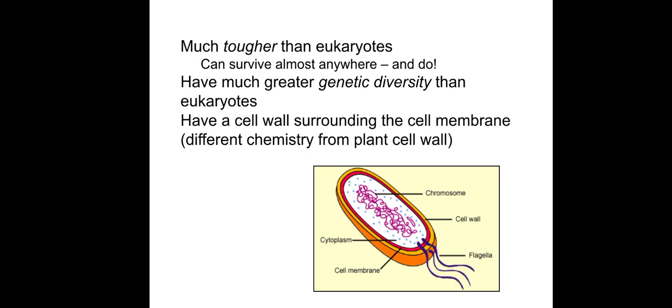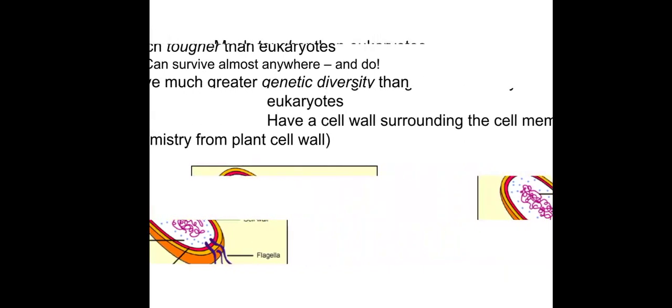Prokaryotes are much tougher than eukaryotes and can survive almost everywhere, though we cannot see them without a microscope or with our naked eye. They exist in air, water, and soil, and have much greater genetic diversity than eukaryotes. They have a cell wall surrounding the cell membrane. Their cell wall composition is different from plant cell walls — plant cell walls are made of cellulose, while bacterial cell walls are made of peptidoglycan. These are important facts for MCQ questions.